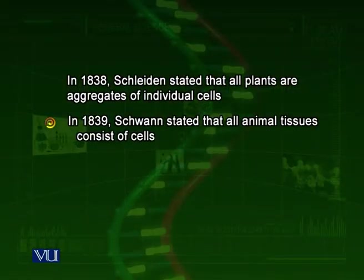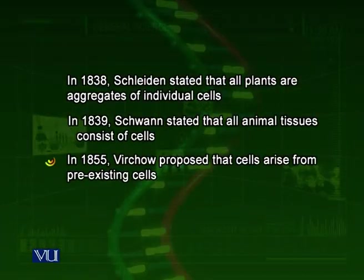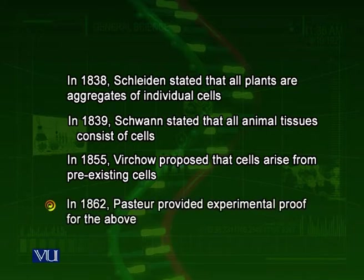Later on, a zoologist — an animal scientist — Schwann stated that all animals also consist of cells. These two theories were combined, and various other people looked at these and combined them to make the modern form of the first part of cell theory: that all living organisms consist of one or more cells. In 1855, another scientist, Virchow, described that cells only arise from pre-existing cells — that is, existing cells divide to produce new cells. Pasteur later produced the proof for this theory.